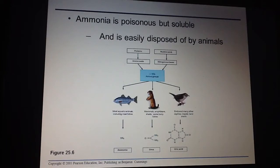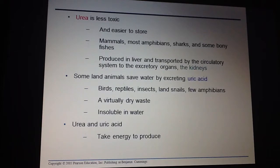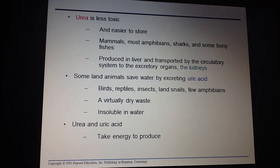But if you're a mammal, an amphibian, sharks, or even some fishes, you have to use energy to create a nitrogenous waste called urea. And if you're a bird, you're going to actually be creating a nitrogenous waste called uric acid. Urea is less toxic, so it's easier to store in our body before we're able to excrete it. Urea is actually being made in the liver. The liver is closely associated with the digestive system. The liver makes urea, then uses the circulatory system to get it to our kidneys, which is ultimately how we excrete things from our body. Birds make uric acid, which is a virtually dry waste — that little black dot in bird poop. It is not soluble in water. The problem with making urea and uric acid is that they take energy, so it requires ATP.